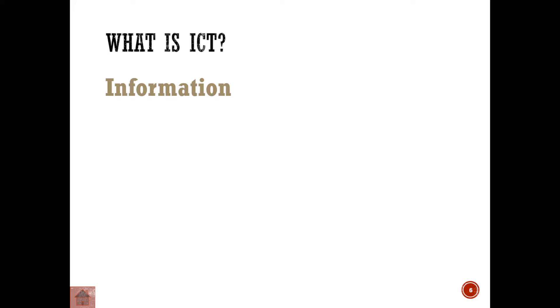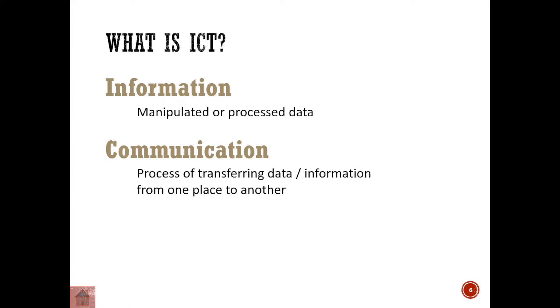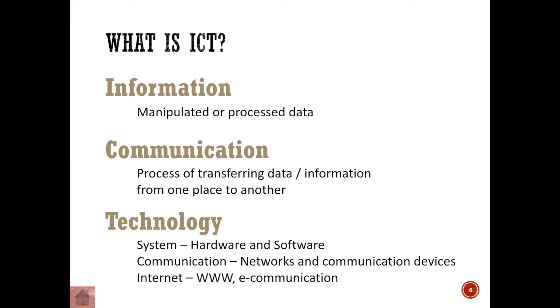What is ICT and what does it stand for? The first part is Information — manipulated or processed data. Data is raw, unprocessed facts; when we process it, it becomes information. Communication is the process of transferring data, moving information from one place to another. Technology refers to hardware, software, communication networks, communication devices, and the internet. Please know that ICT stands for Information Communication Technology and be able to explain what it encompasses.